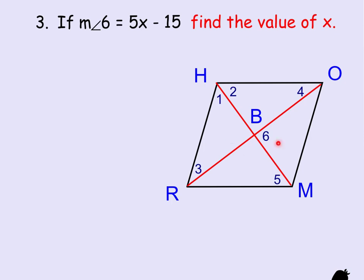And so therefore, we know that all of these angles here in the middle have to be 90 degrees. And so to find x, I'm going to take the 5x minus 15 and set it equal to 90. Add 15 to both sides, we get 5x equals 105. And when we divide by 5, we get x equals 21.